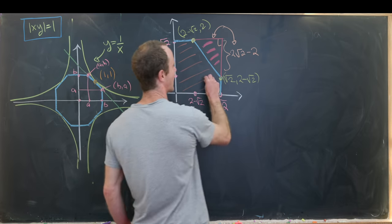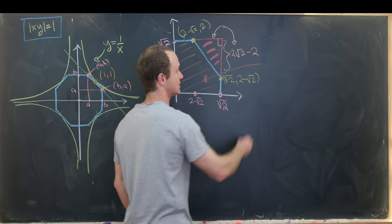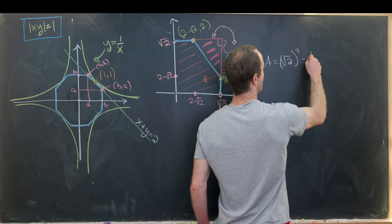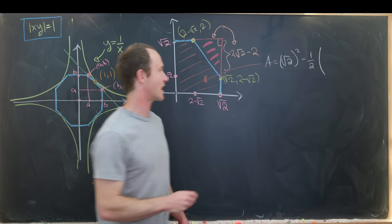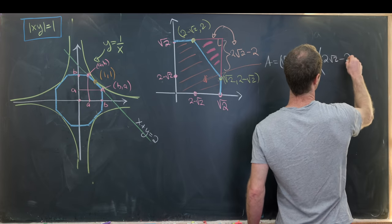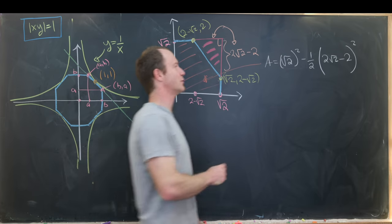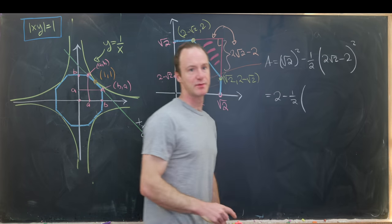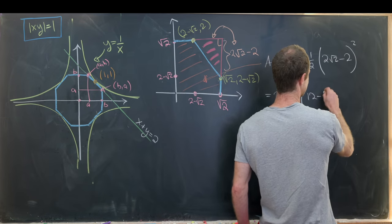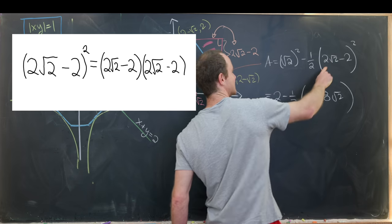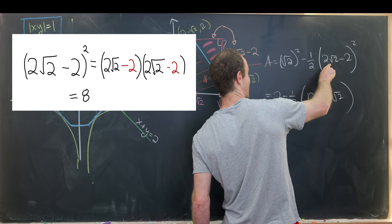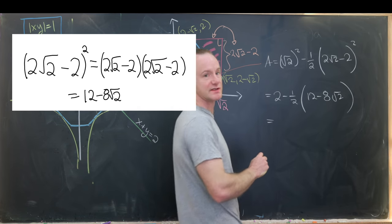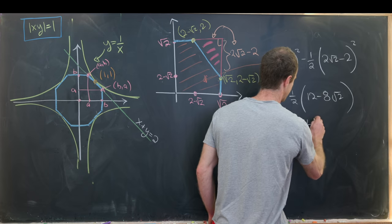So in the end we'll get the area of this brown shaded region is given by the following calculation. So we've got the area of the square. So that's the square root of 2 squared minus the area of this triangle. But the area of the triangle is 2 square root of 2 minus 2 squared like that. So the square root of 2 squared is 2 and then we have minus 1 half. Then multiplying that out we'll see that we get 12 minus 8 times the square root of 2. That's because 2 times the square root of 2 squares to 8. We have to add 4 and then this comes from the cross term. So after doing a bit of simplification we'll see that this is equal to 4 times the square root of 2 minus 4.